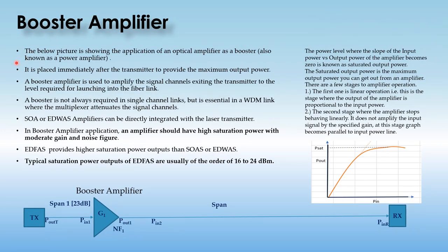The booster amplifier is placed immediately after the transmitter to provide the maximum output power. It is used to amplify the signal channel exiting the transmitter to the levels required to launch into the hyperlink. A booster is not always required in a single-channel link, but it is essential in a WDM link when the multiplexer attenuates the signal channel, and to compensate this attenuation the booster amplifier is very important.